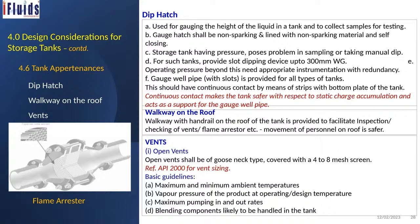The flame arrester prevents flames from going out of the vent. Open vents shall be of gooseneck type covered with a 4-to-8 mesh screen to prevent birds or insects from entering. Vent sizing is covered under API 2000, and the basic guidelines are: maximum and minimum ambient temperatures, vapor pressure of the product at operating conditions, design pressure and temperature, maximum pumping in and out rates, and the blending components likely to be handled.